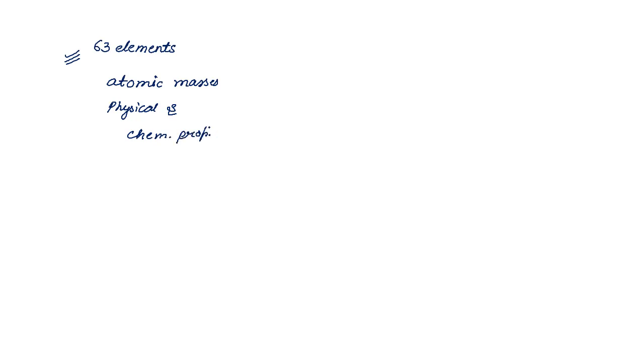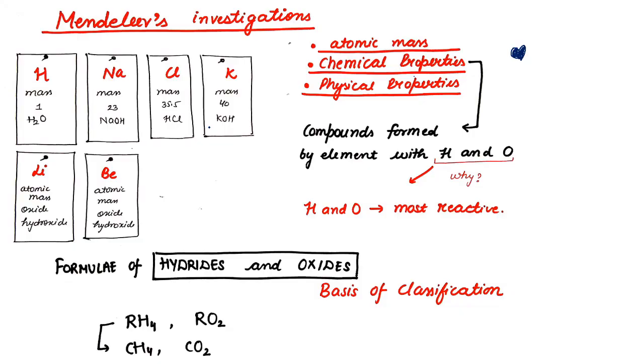In the physical and chemical properties, what he did after that, he took 63 cards and he wrote down the properties of each element separately. I couldn't draw very much but still I have tried something. For example, this was card number one. He had written hydrogen here. The mass number was written and he has written the formula of the compound of hydrogen with oxygen.